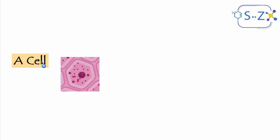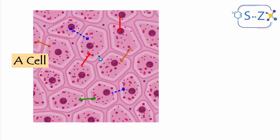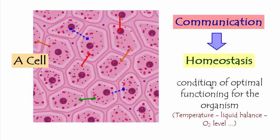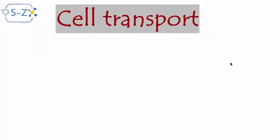But the cell is not an isolated entity — it's surrounded by other cells, and these cells communicate among each other. This communication is important to maintain what we call homeostasis. Homeostasis is a condition of optimal functioning for the organism — the condition where everything is perfect in the body, just like temperature, liquid balance, O2 level, etc. All these cells communicate among each other in order to maintain this state of homeostasis.